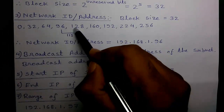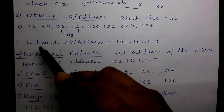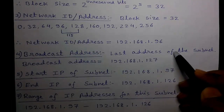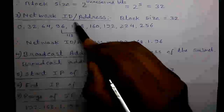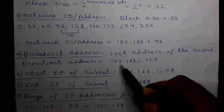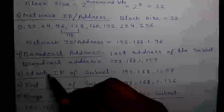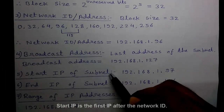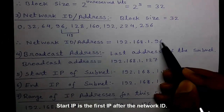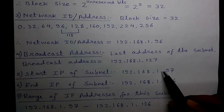Fourth calculation: broadcast address. The broadcast address is the last address of the subnet. Our last address is 127 because from 128 the next subnet starts. So the broadcast address is 192.168.1.127. Fifth calculation: start IP of the subnet. The start IP is the IP just after the network ID. The network ID is 96, so the start IP is 192.168.1.97.